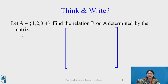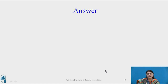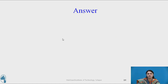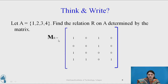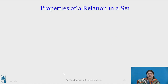Now the question is: let A be the set 1, 2, 3, 4. Find the relation R on A determined by a given matrix. Take a pause and think. We consider all elements that have value 1 in the matrix. So the relation set will include pairs like (1,1), (1,3), (2,3), (3,1), (4,1), (4,2), (4,4) — using 1, 2, 3 instead of B1, B2, B3. This is all about matrix.